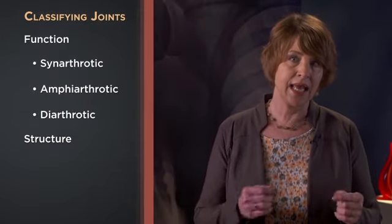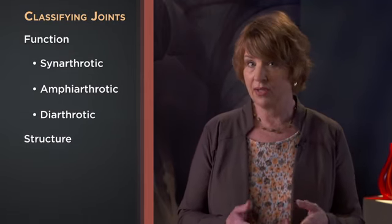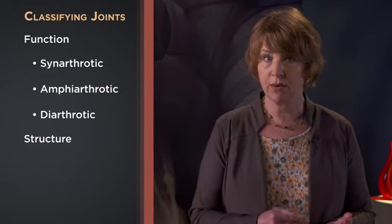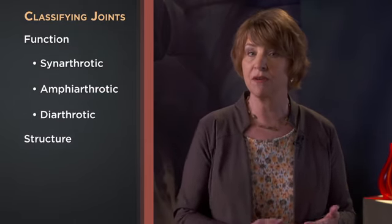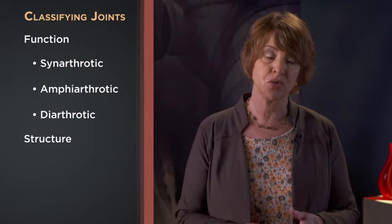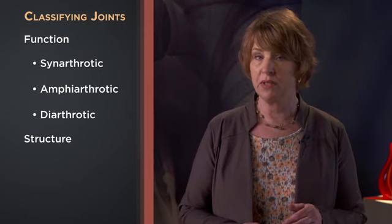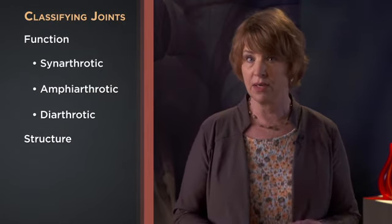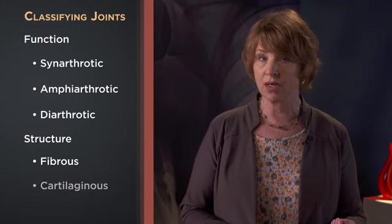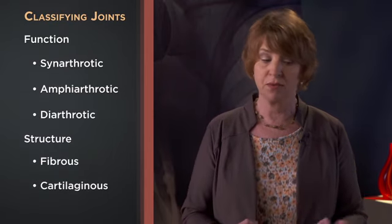Any joint in the body can be classified two ways: first by its degree of movement, as we just learned, and secondly by its connective tissue linkages or structure. We've defined synarthrotic, amphiarthrotic, and diarthrotic as the three functional classifications. Now let's take a few minutes to talk about the three structural classifications. Joints that have little or no movement — amphiarthrotic and synarthrotic joints — are structurally classified as either fibrous joints or cartilaginous joints, based on the type of connective tissue that links the facing surfaces of the two bones forming the joint.